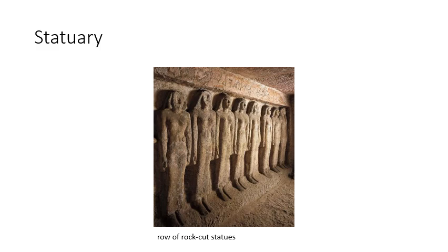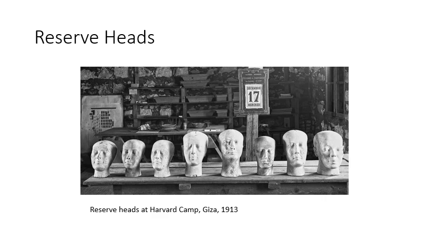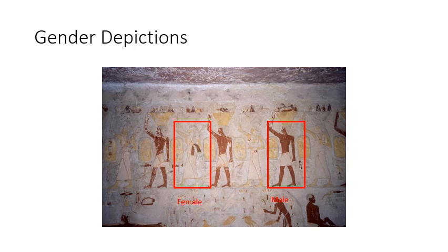What about statuary? What does that tell me? Well, these are rock-cut statues. And this is a limestone statue, freestanding — this is a mother and daughter, perhaps. And then we have these odd things called reserve heads that they're not sure what they're for. What can I learn about these burial chambers and Egyptians' ideas about the afterlife through these heads?